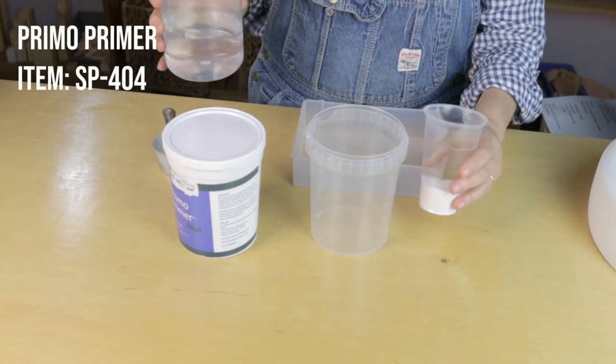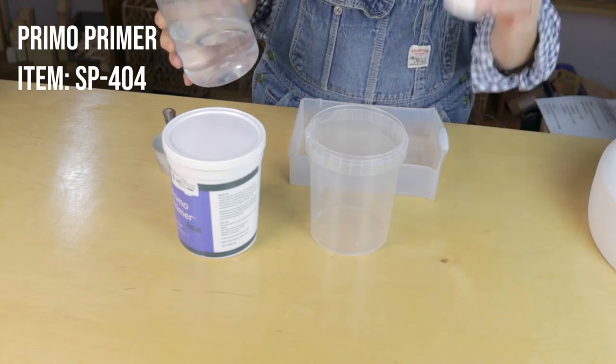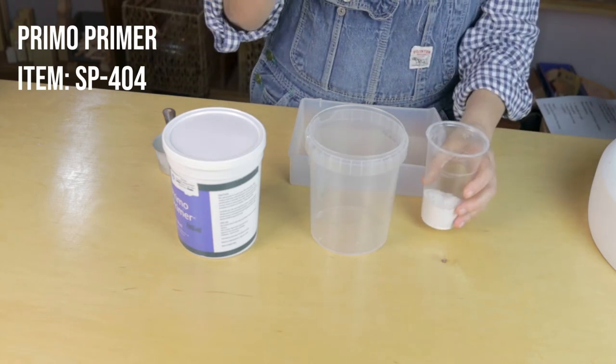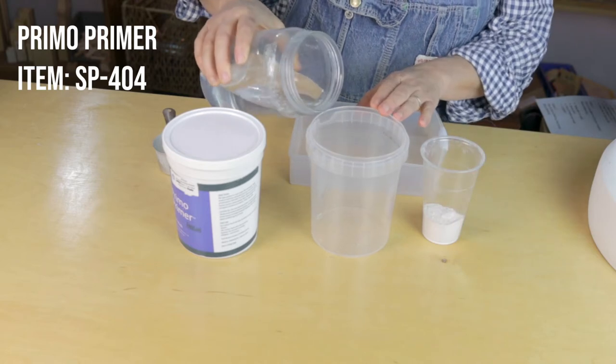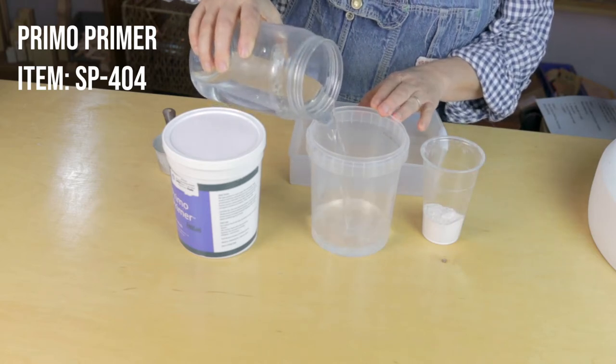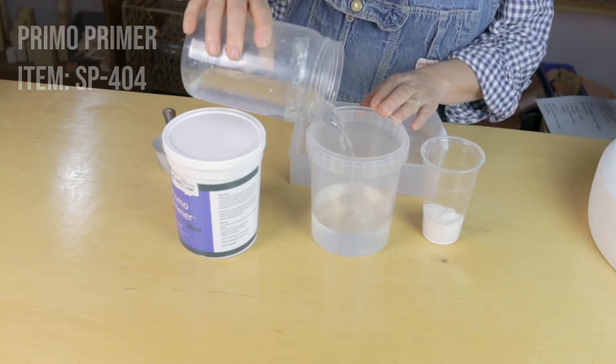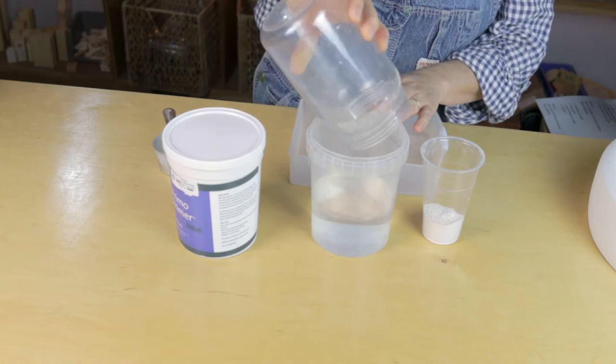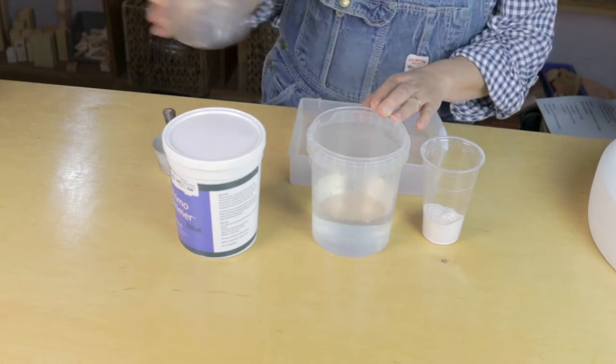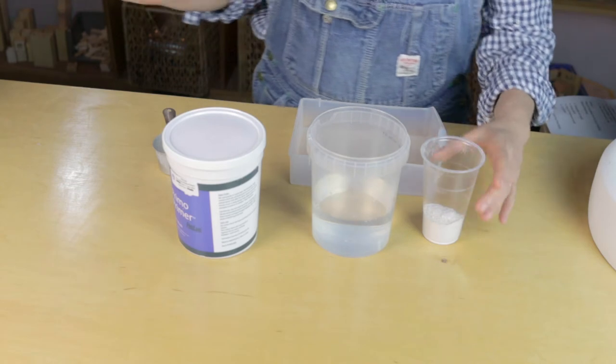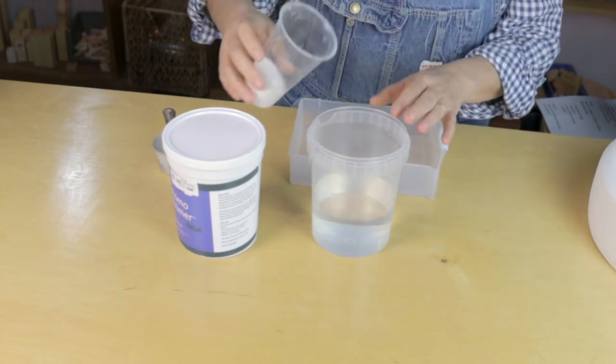The proportions for mixing your Primo Primer are one part primer, five parts water. So I have approximately one and two-thirds cup of water and one-third cup of Primo Primer.